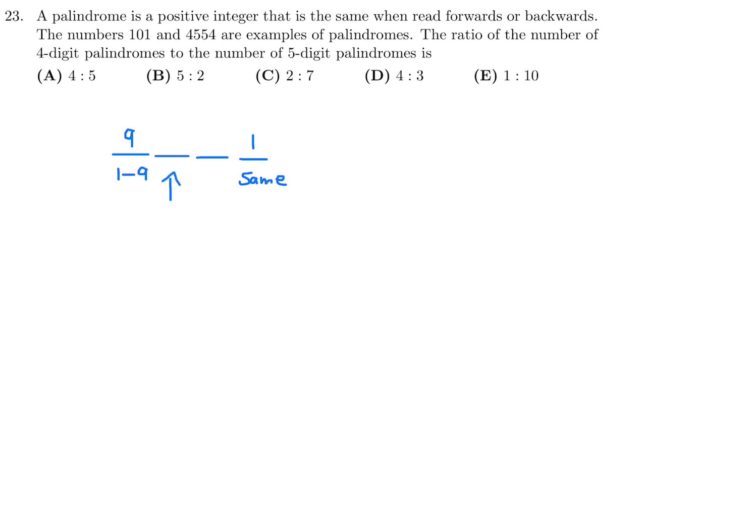Now we look at the second spot. In the second spot, we can put any number from 0 to 9. There's 10 possible choices there. And this number will of course be the same as the second in order to make it a palindrome. So that's fixed. So for 4 digits, we have 9 times 10 times 1 times 1, which is 90 palindromes.